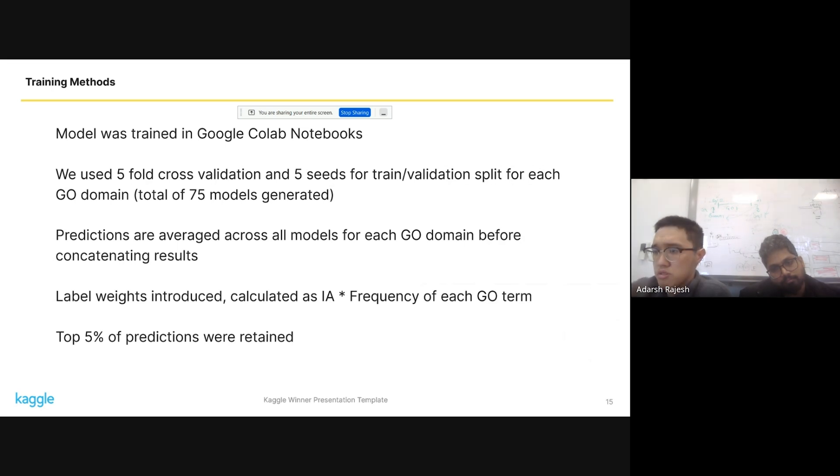One thing that we introduced was weights for each label, which we, again, calculated as IA times frequency. So the model during training weighed them differently, based on how important those labels are. Of all the predictions we generated, we simply took the top 5% for submission.